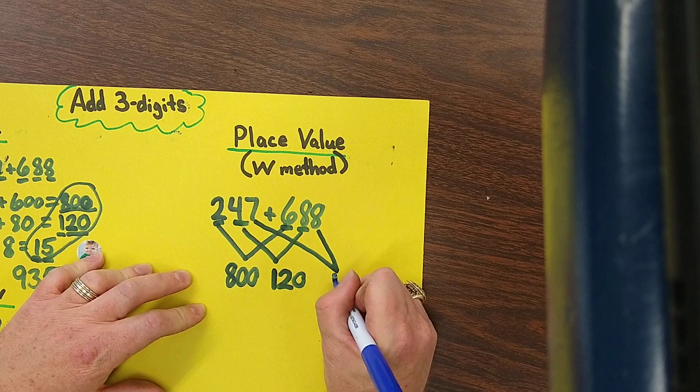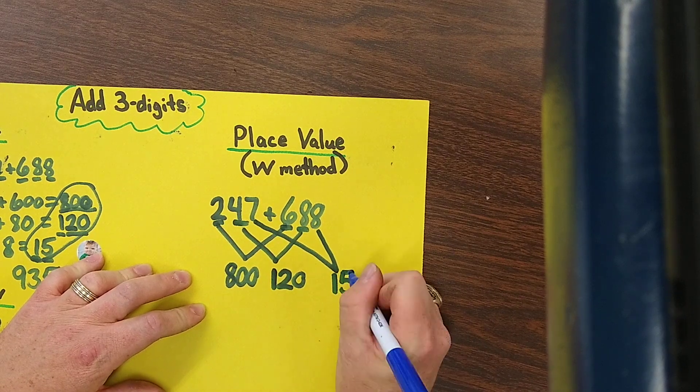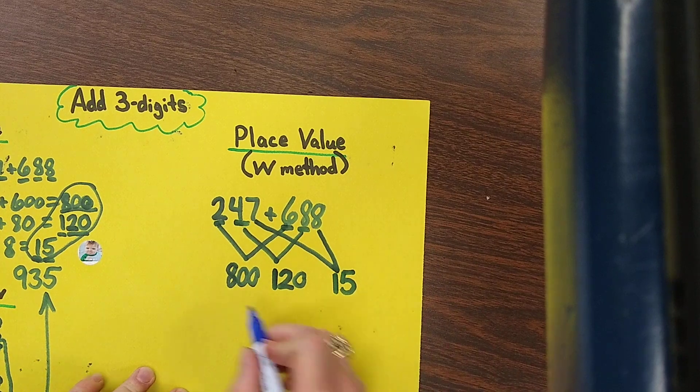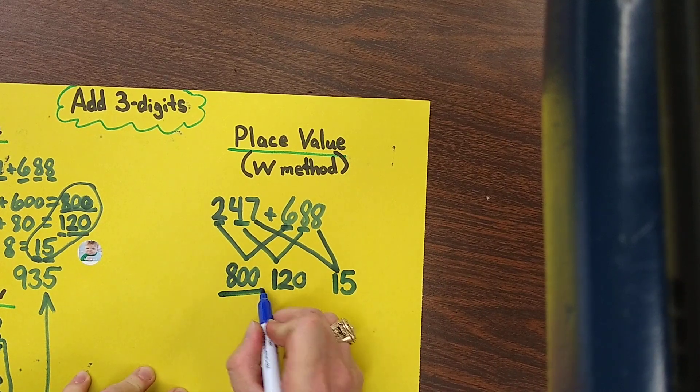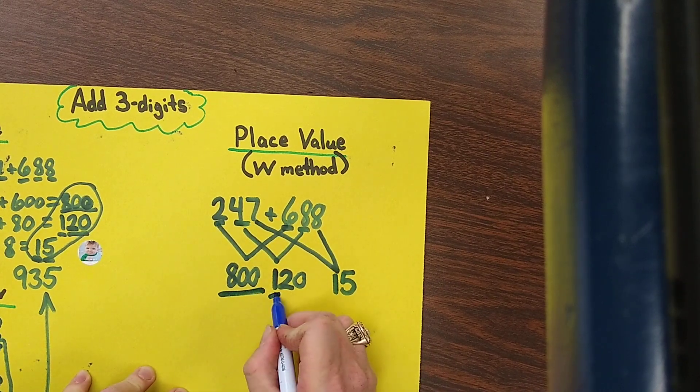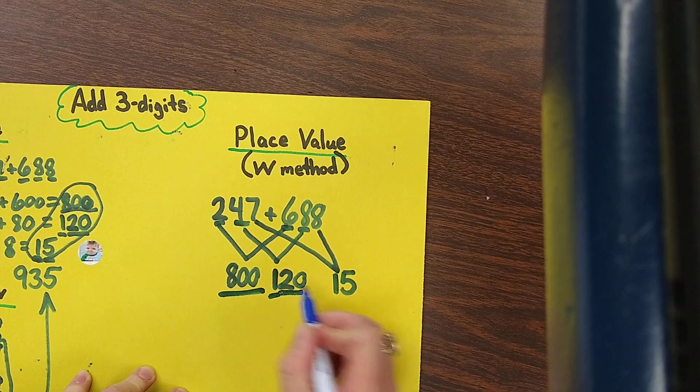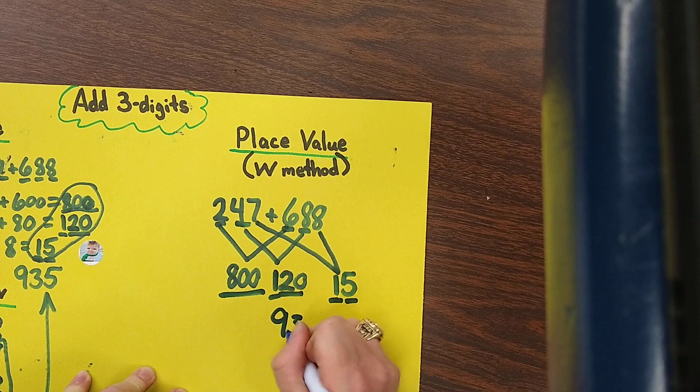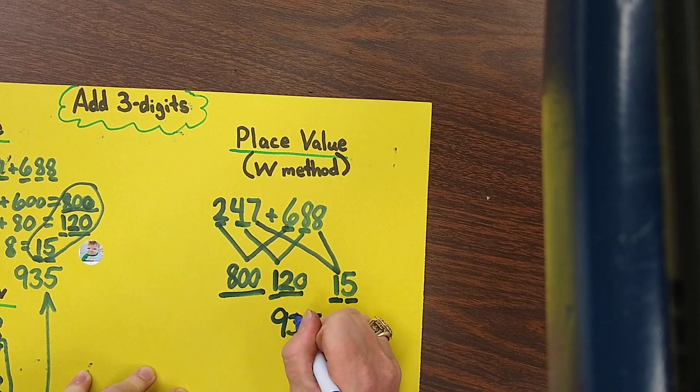And the last one is seven ones plus eight ones, and we can add those together and that gives you 15. Remember before, seven and seven plus one more: 15. Now we'll walk down and pick them up and that's 800, and another 100 is 900, 920, 930, 935.